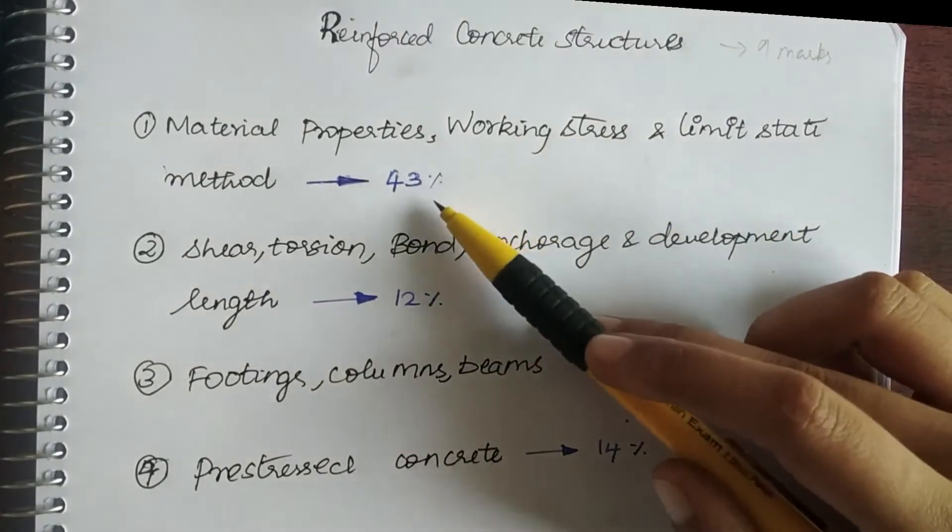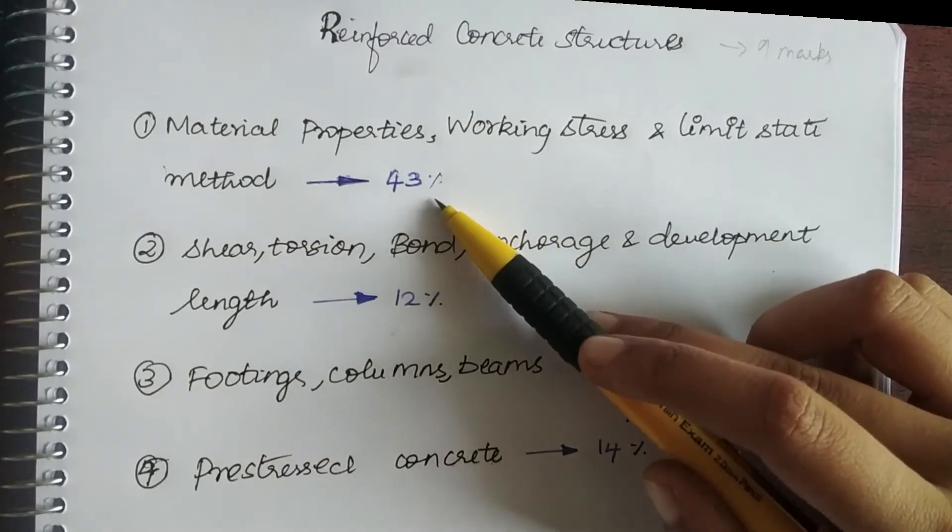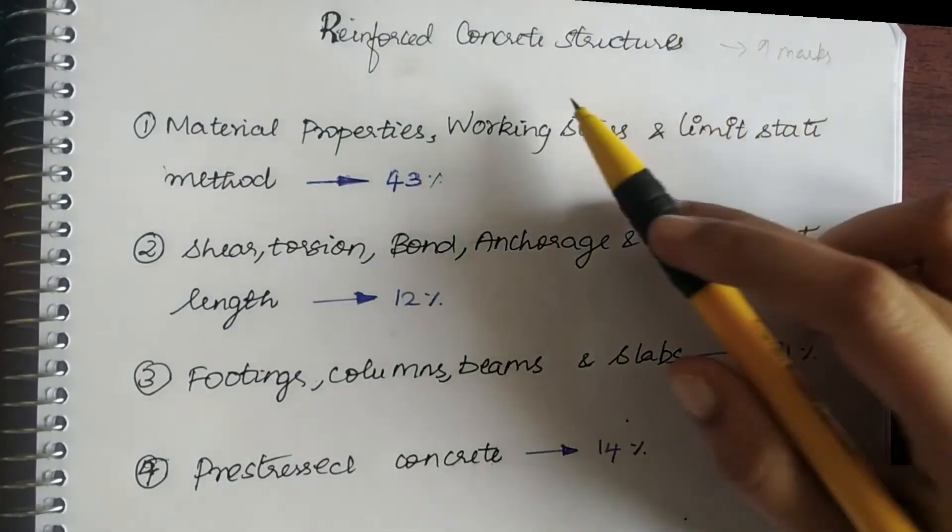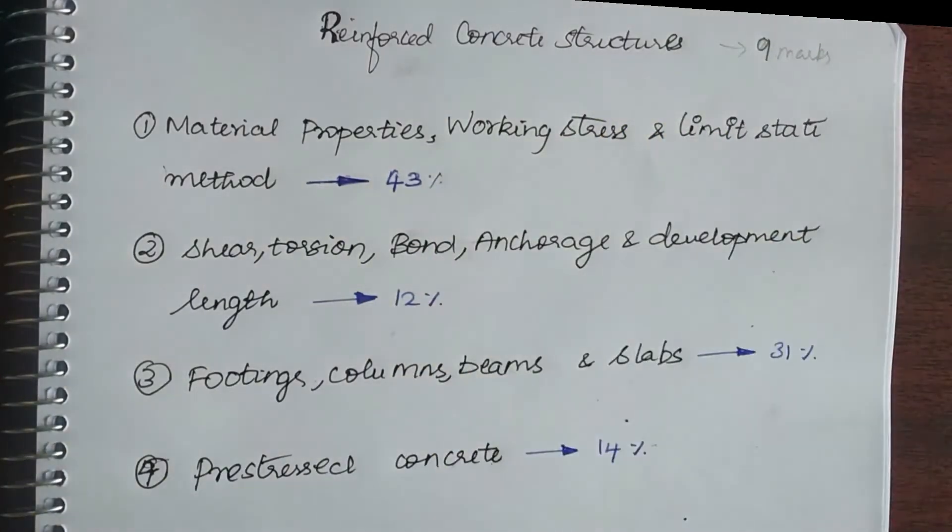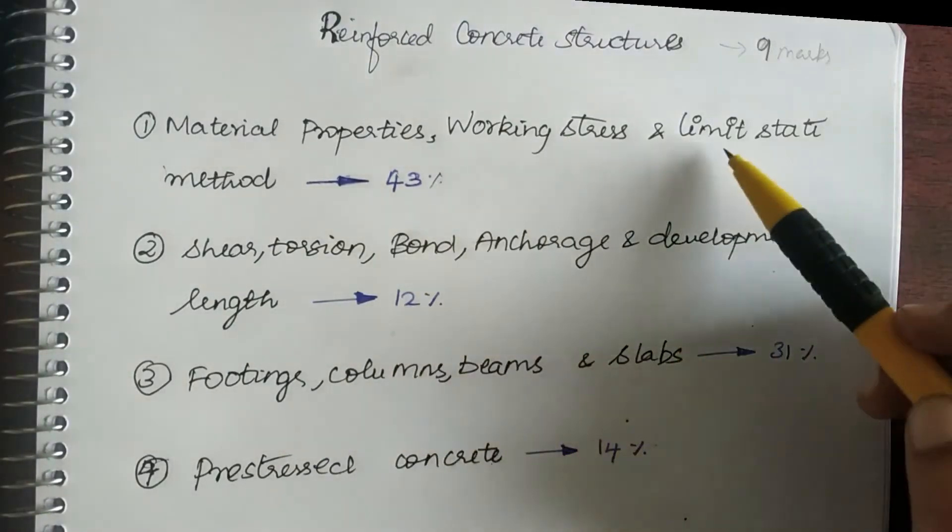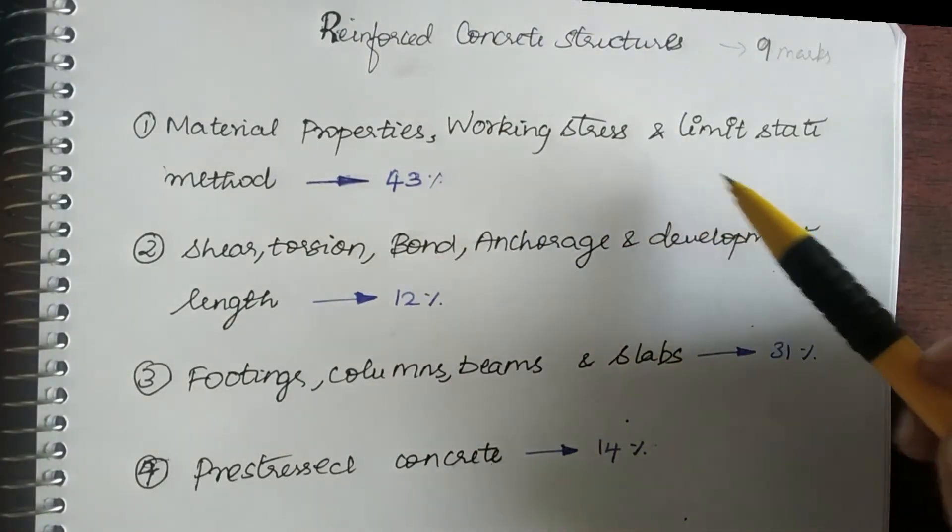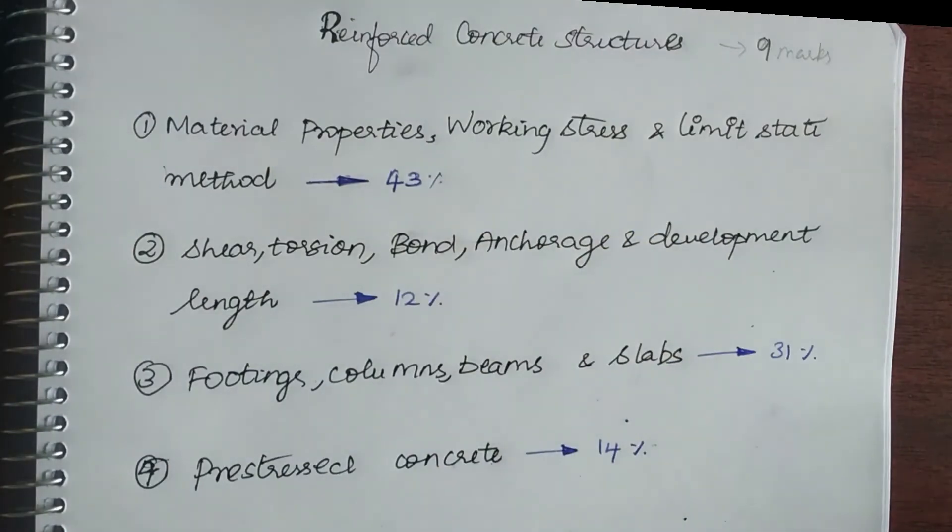The concept and simple concrete technology is going to give you 43 percentage of marks. Until 2018, the average marks in RCC structure is 9 marks, so 43 percentage is almost 4 marks. You are going to get only by learning few concepts in working stress method, limit state method, and simple concrete technology.